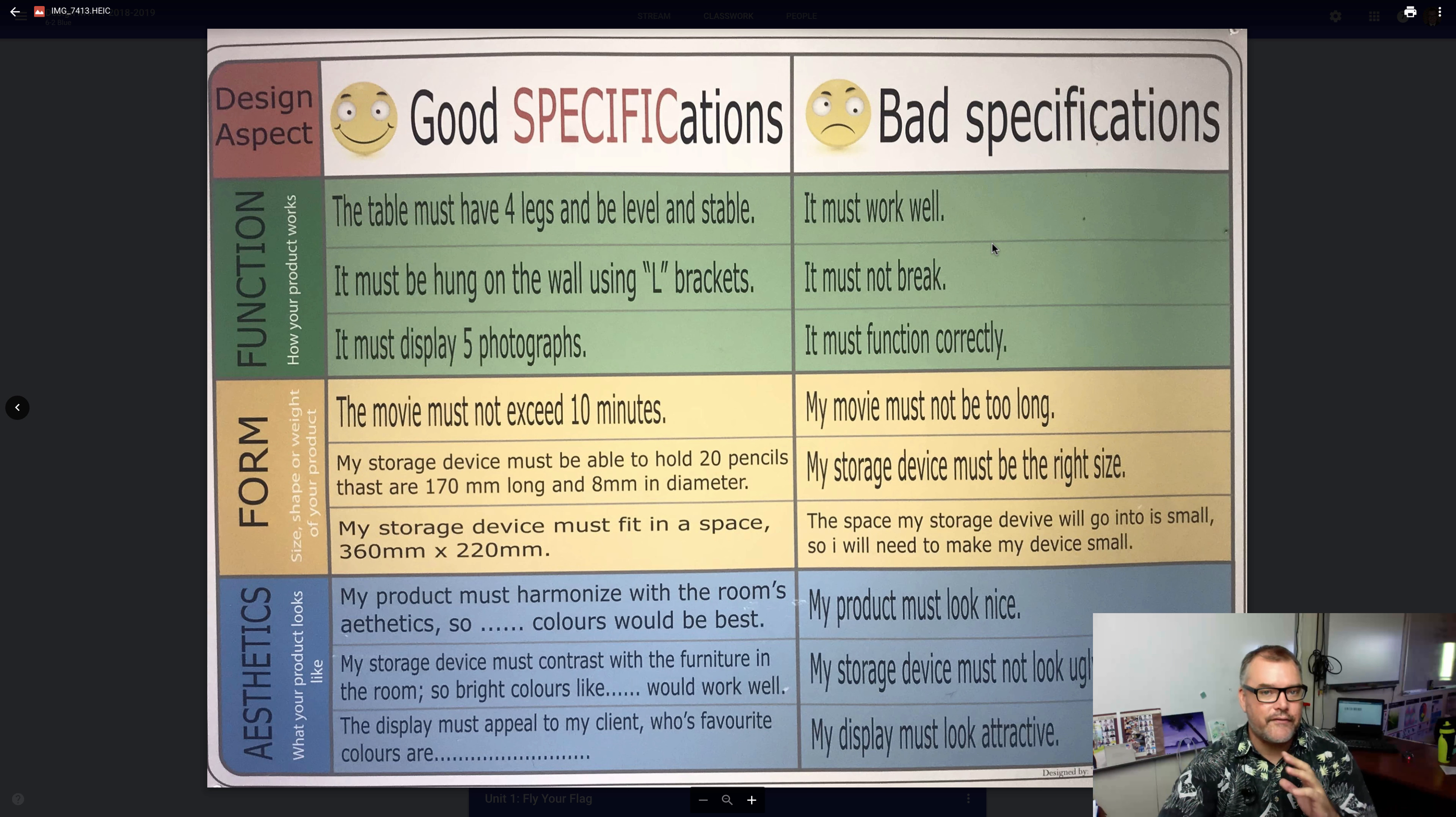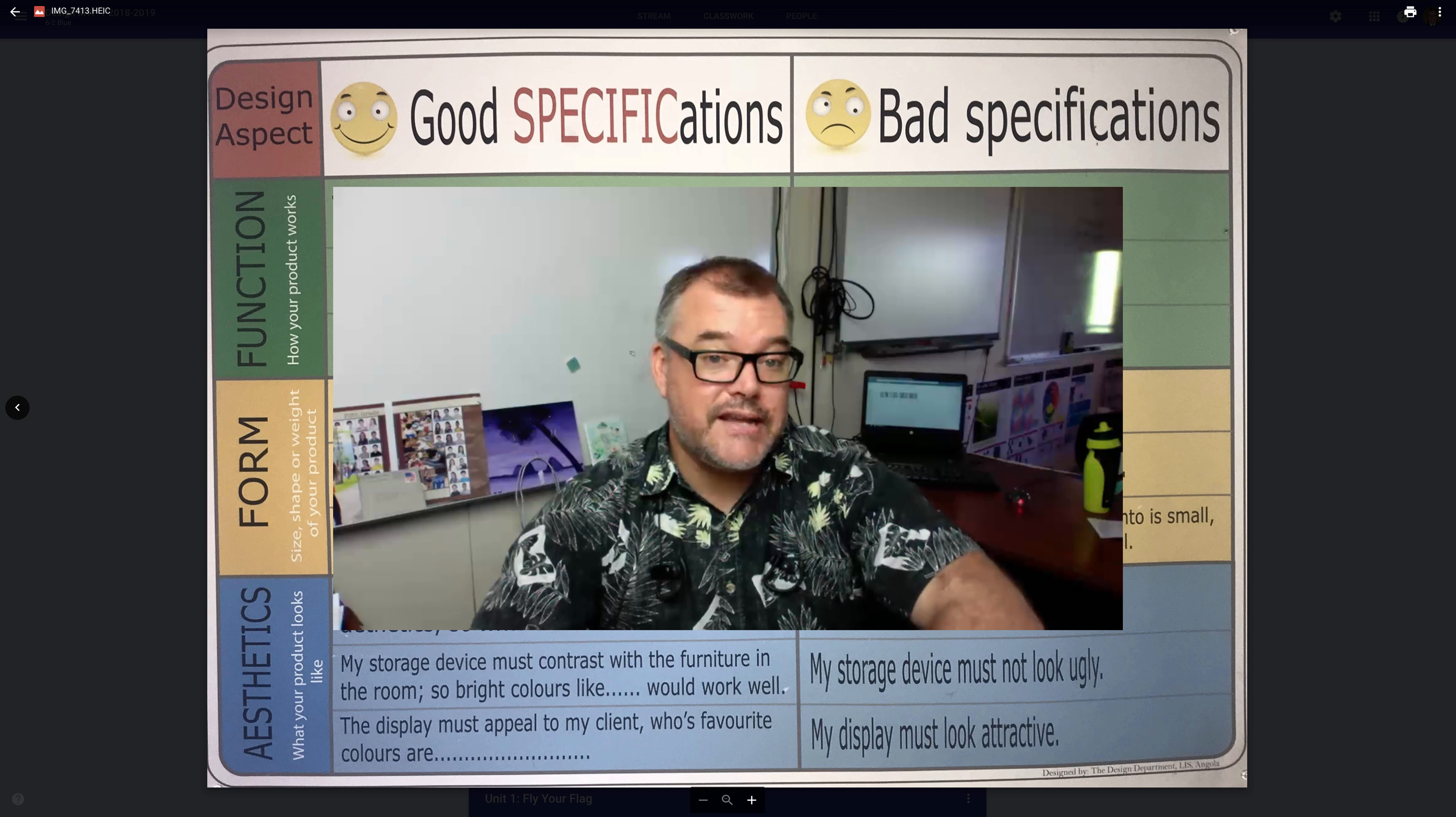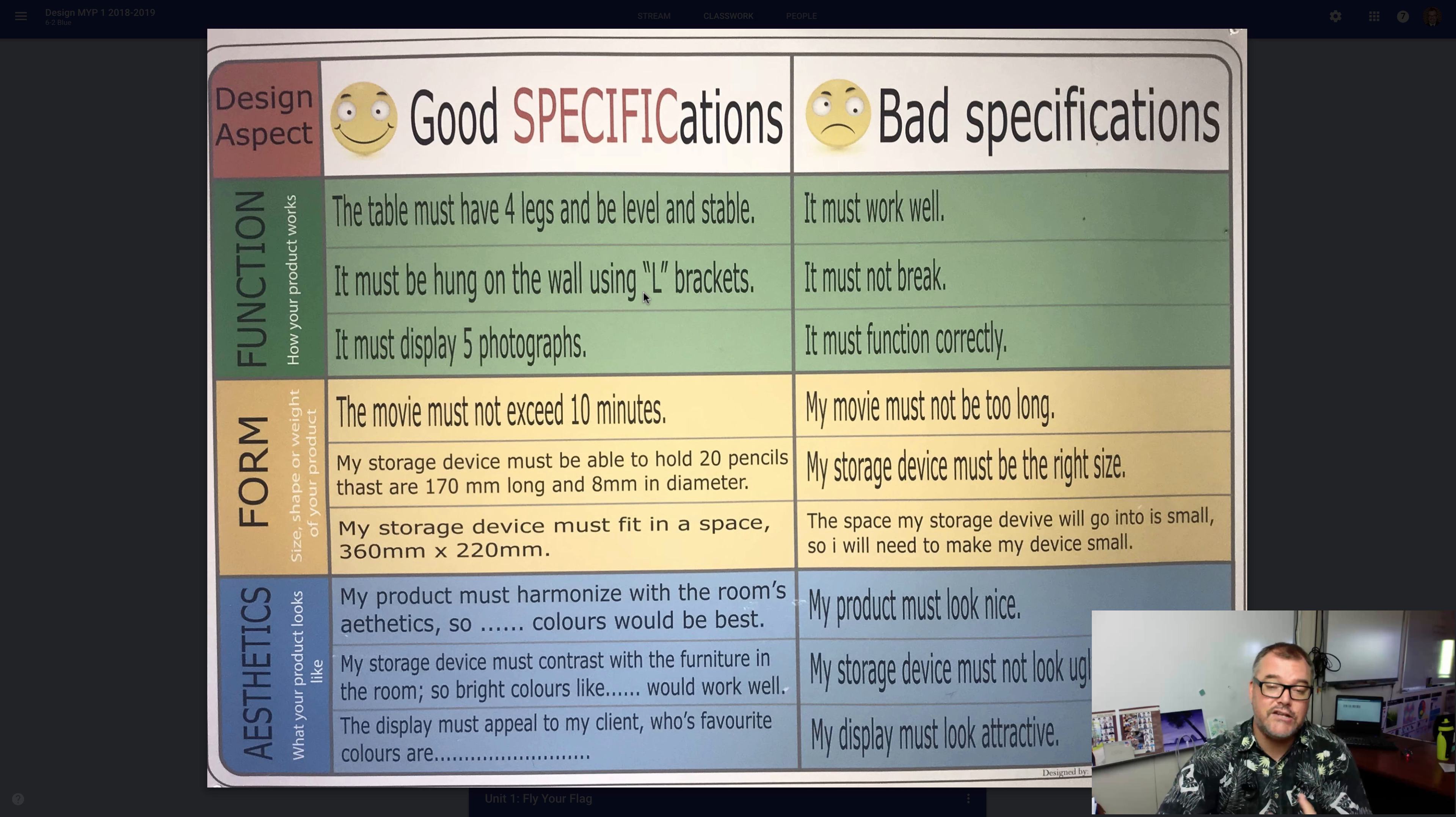It's all about how to create good specific design specifications. And remember, they can come in a variety of different formats, but the main topics or the main content areas that we think about when we're creating our specifications are how does our product function, what form does it take, and how does it look or what is the aesthetic value of it.